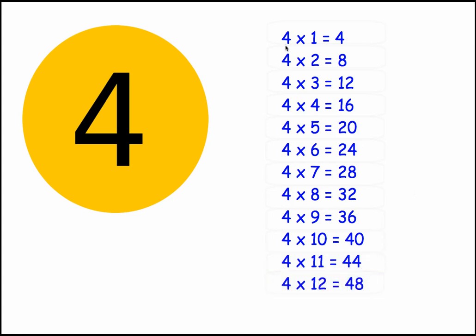Just to recap: 4 times 1 equals 4, 4 times 2 equals 8, 4 times 3 equals 12, 4 times 4 equals 16, 4 times 5 equals 20, 4 times 6 equals 24, 4 times 7 equals 28, 4 times 8 equals 32.